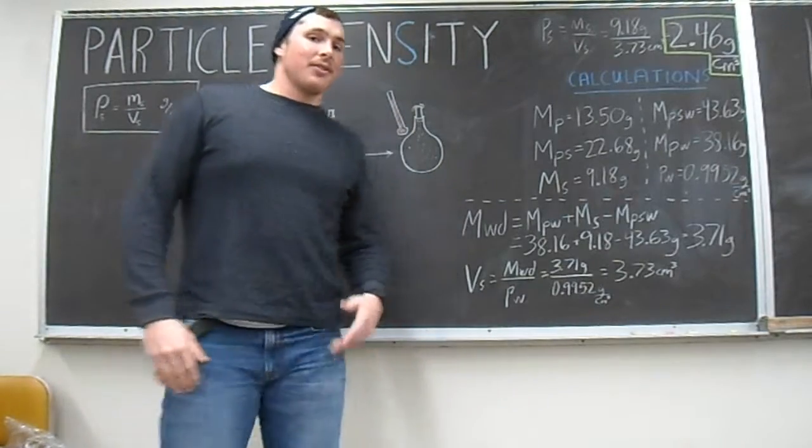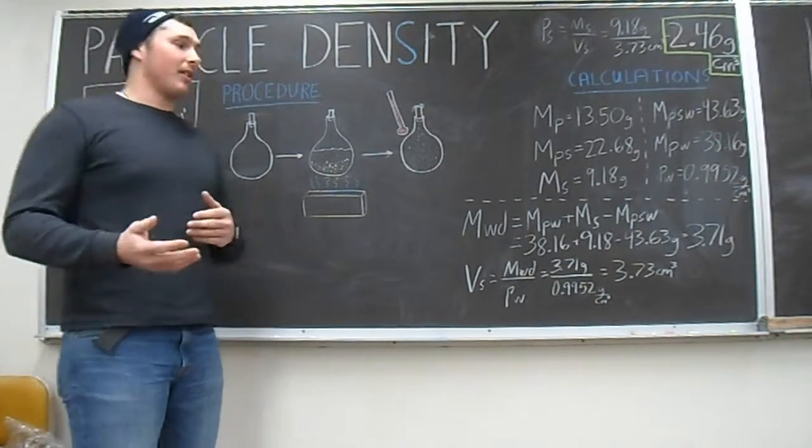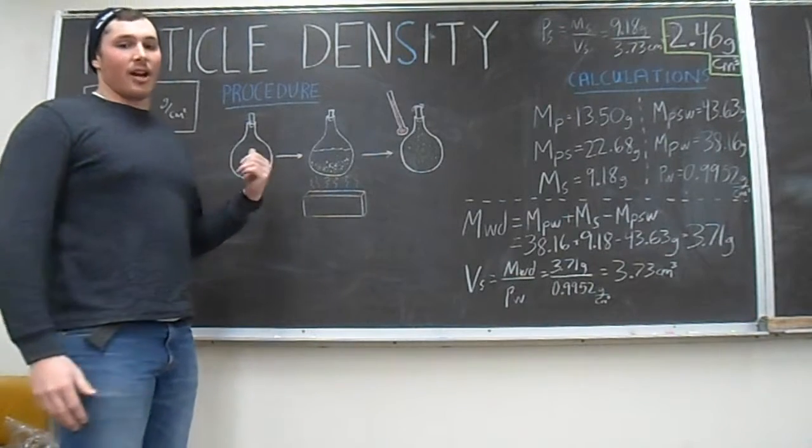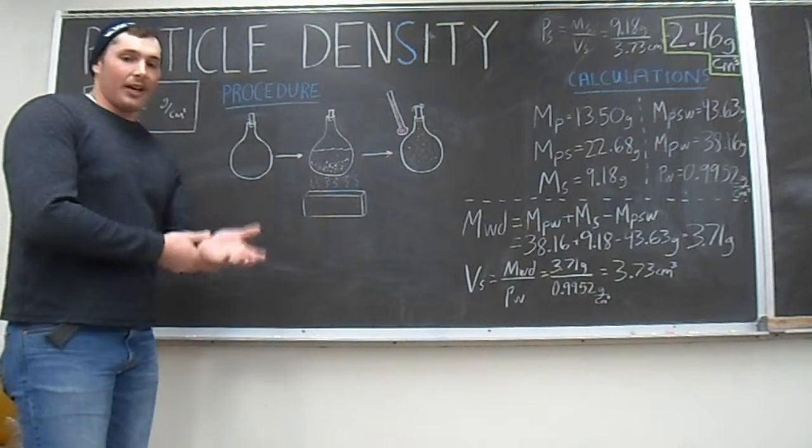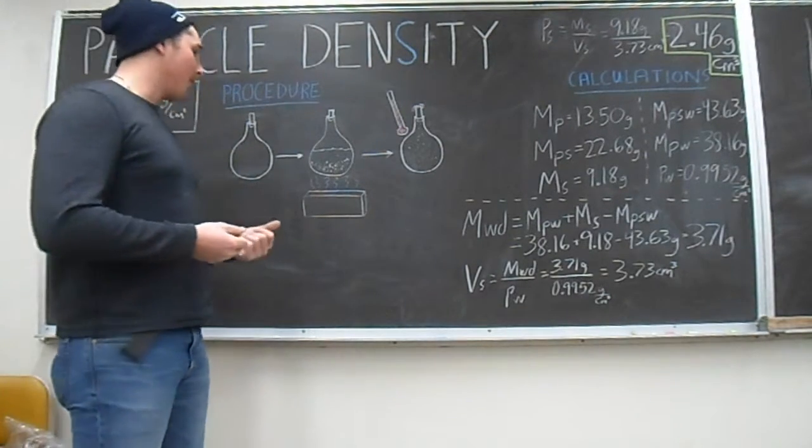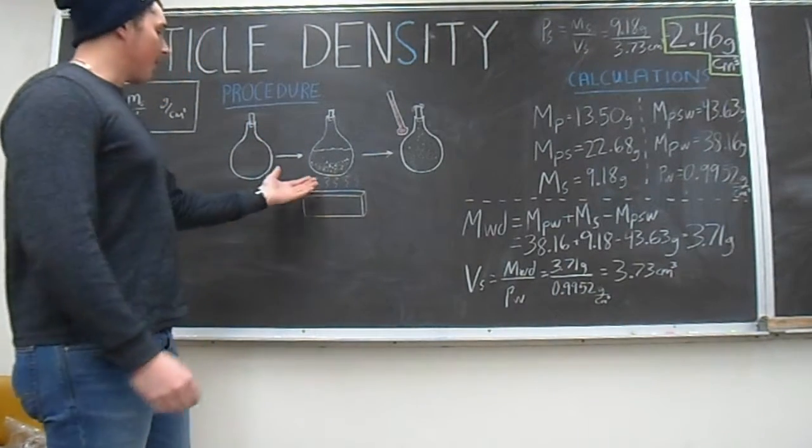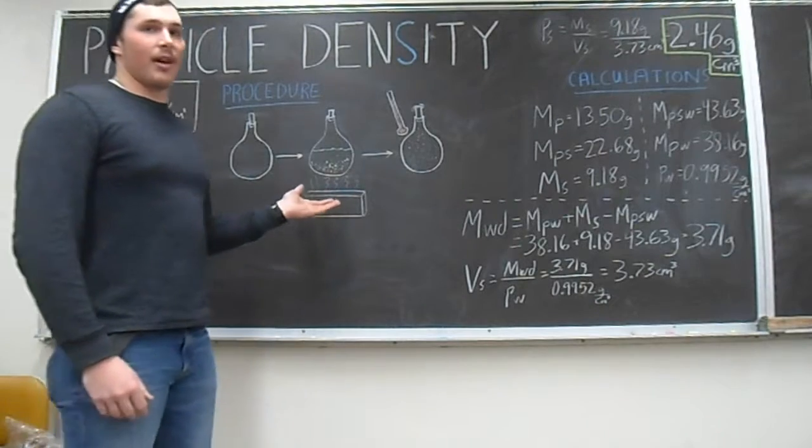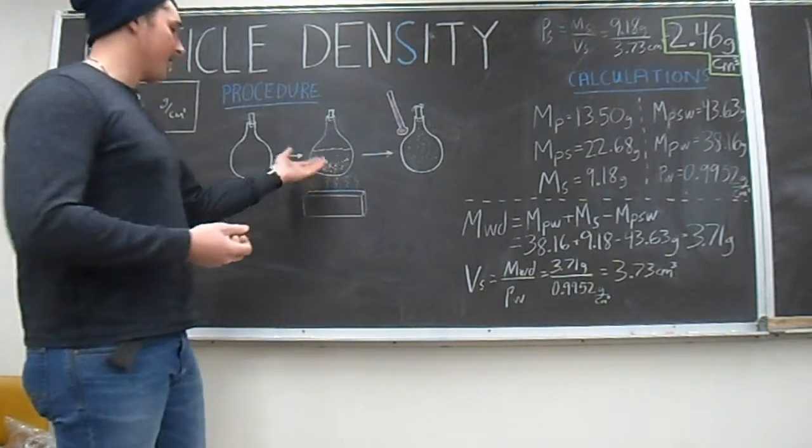One procedure for determining particle density is the pycnometer method, which we did in class. You take a clean dry pycnometer, which is this lovely drawing right here, you weigh that, and then you add a known mass of ground up soil to it and fill it about two-thirds full of water. Then you place it in a warm sand bath to eliminate any trapped air in that soil.